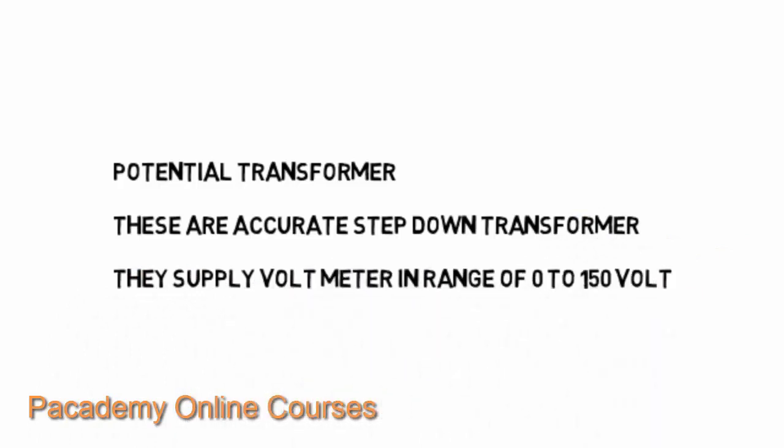Potential transformers are accurate step-down transformers. They supply a voltmeter in the range of 0 to 150 volts. So these transformers are mainly used to measure the voltage and to supply the voltmeter in the range of 0 to 150 volts.